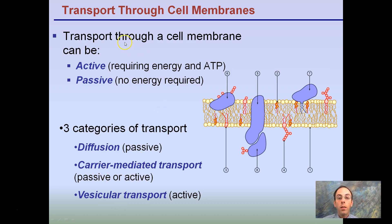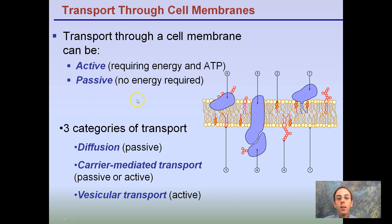Within these categories, we can subdivide them into active and passive. Active transport requires energy and ATP — like active learning, which requires energy. Passive transport requires no energy investment. We all wish that's how we could learn — just sitting there absorbing information with no energy required. But in this class, it tends to be more of the active transport approach.